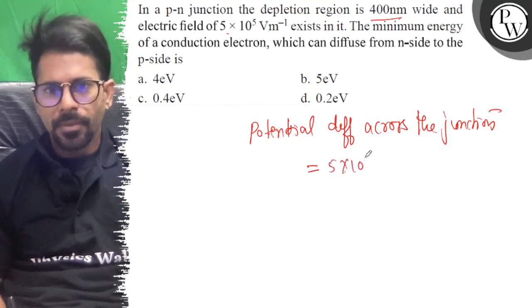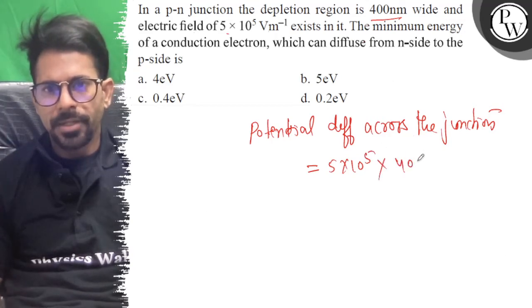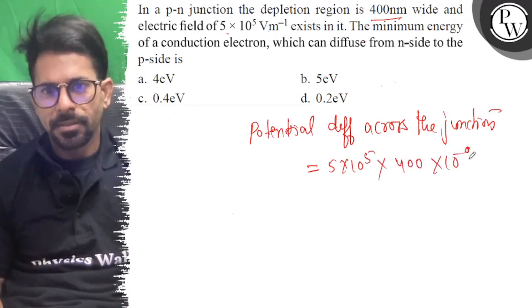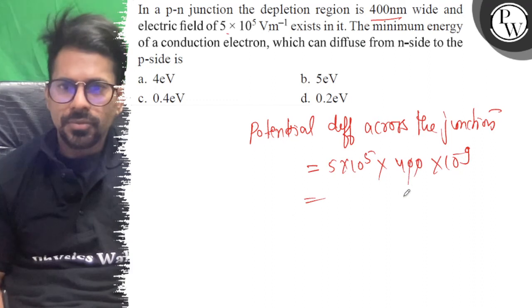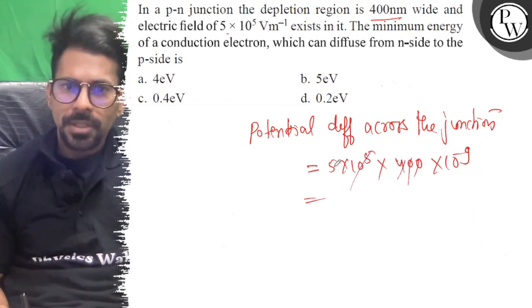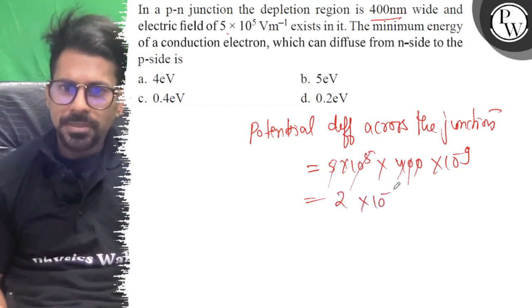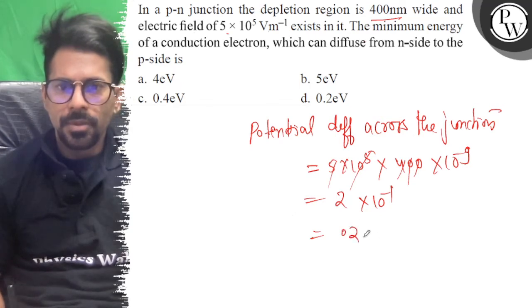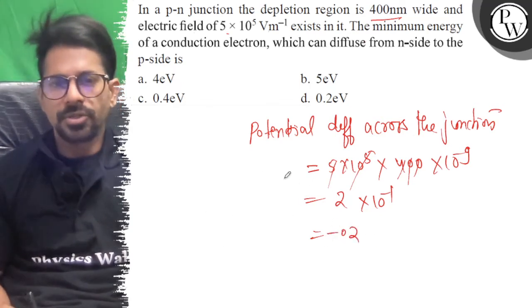5 into 10 power of 5 into 400 nanometer, 10 power minus 9. So this is 2×10^-1. So this is 0.2 and this is negative potential drop.